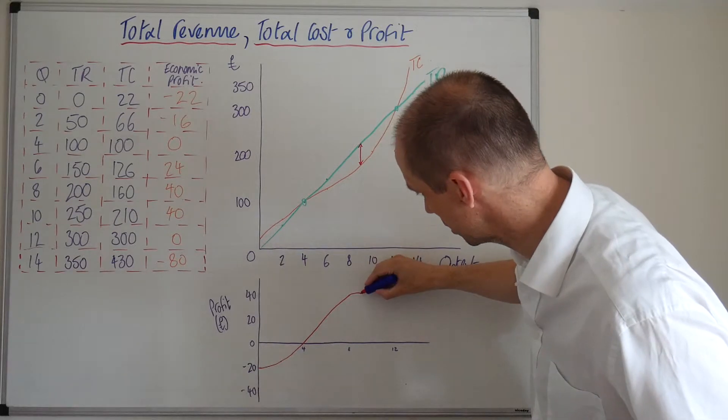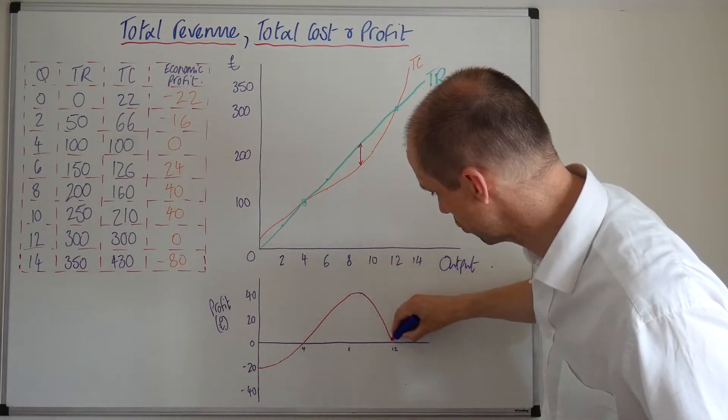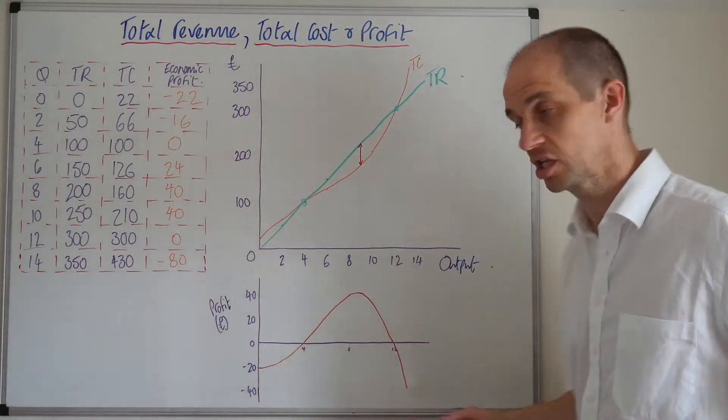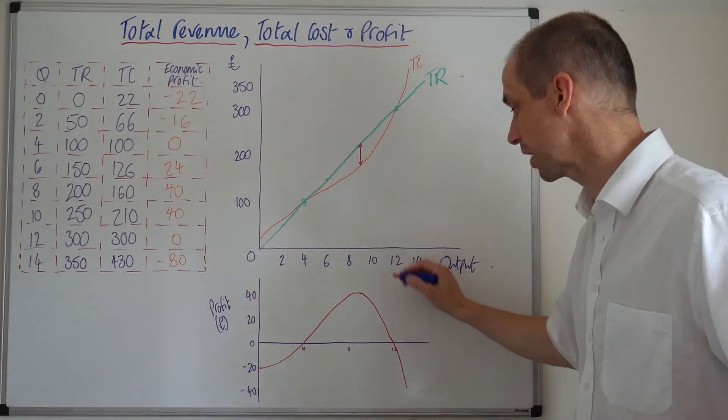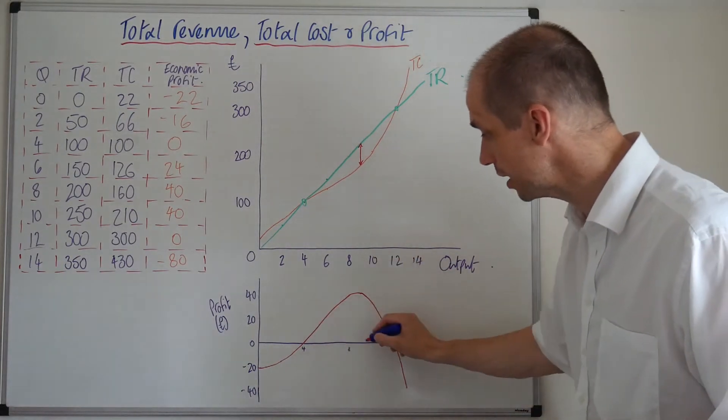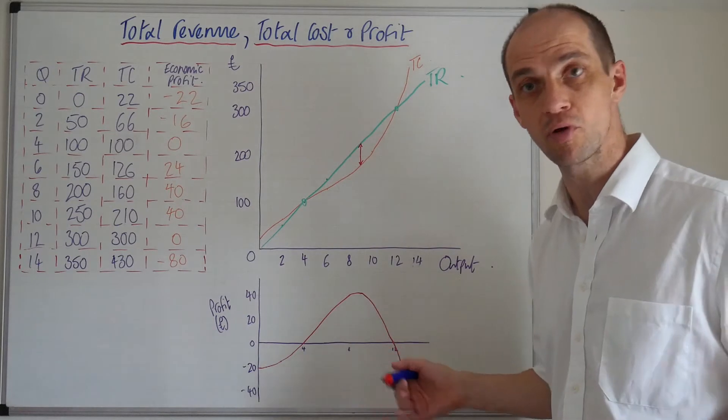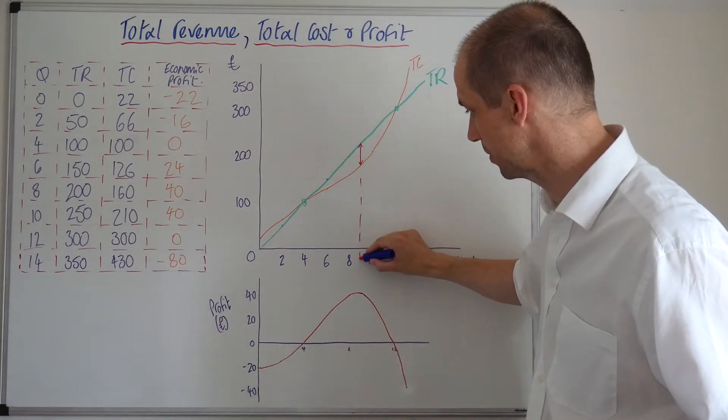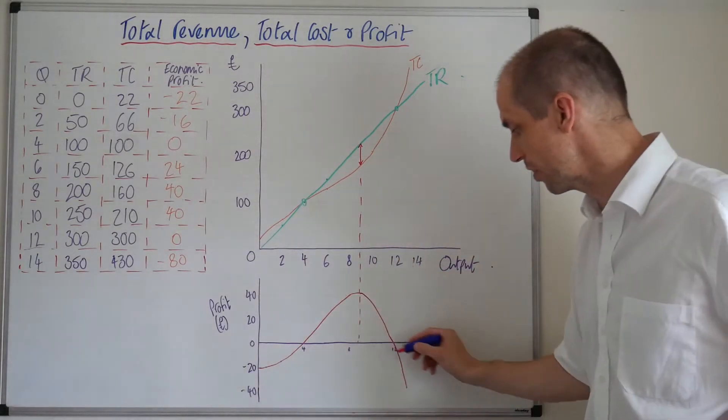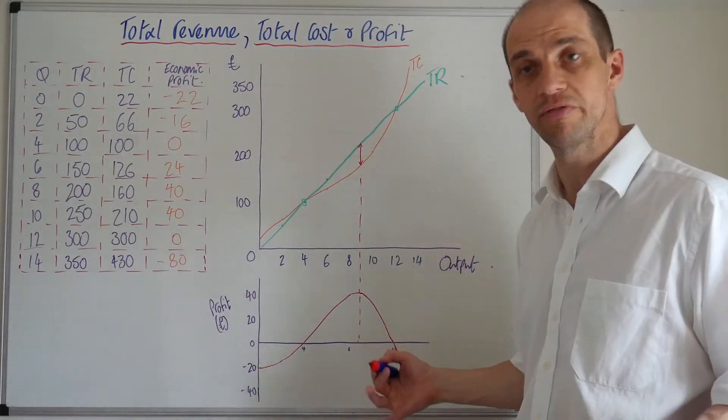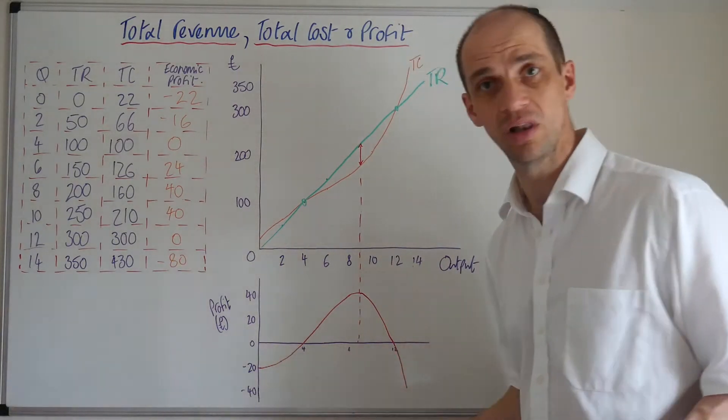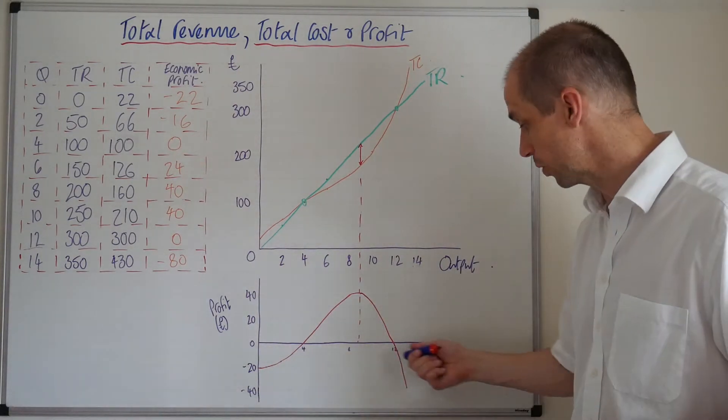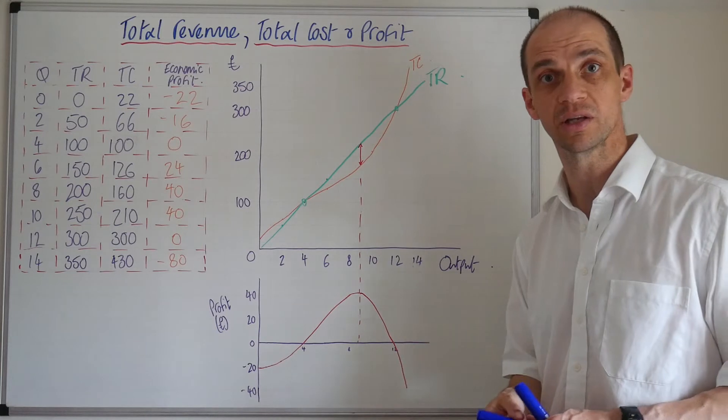And then we see, suddenly, a big, big fall in the actual situation facing the firm. So we can see that any point here is where profits are really being attained, and the firm is making economic profit, but then as soon as they go beyond 12 units of output, or if they've got less than four units of output, we can see that a loss is also being sustained.